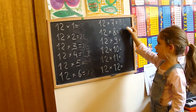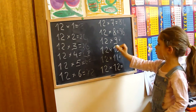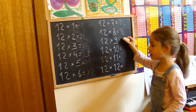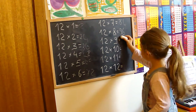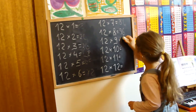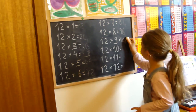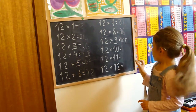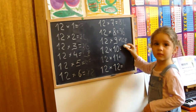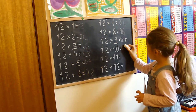Twelve times eight, ninety-six. It's hundred-eight. Twelve times ten, it's hundred-twenty.